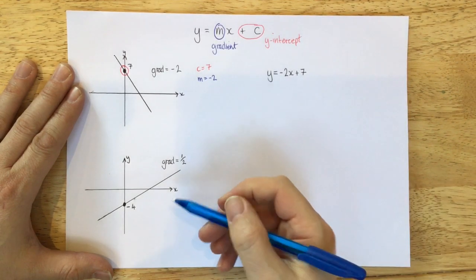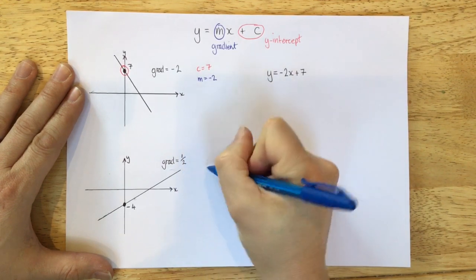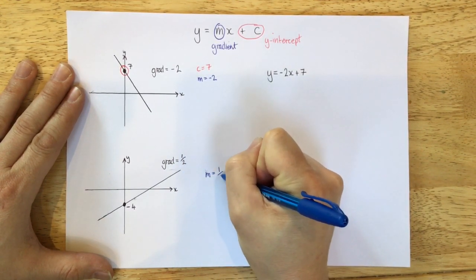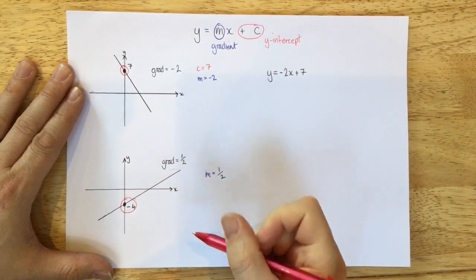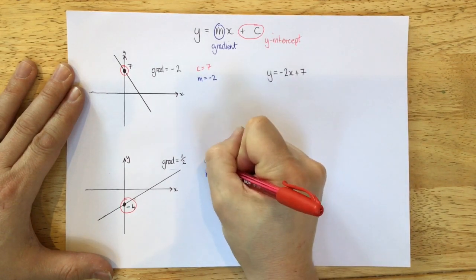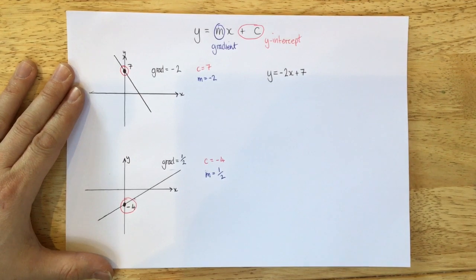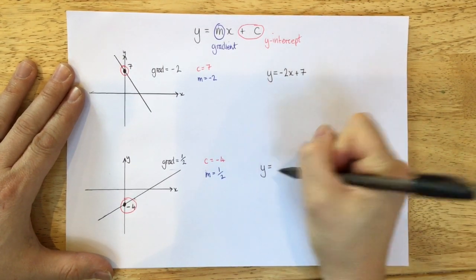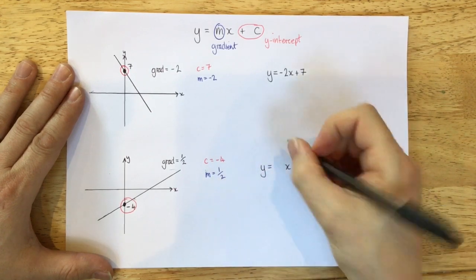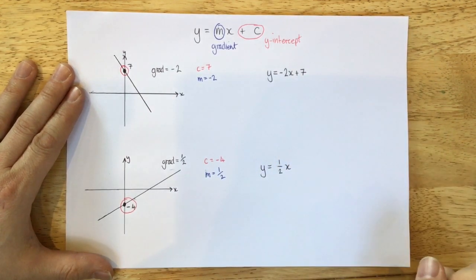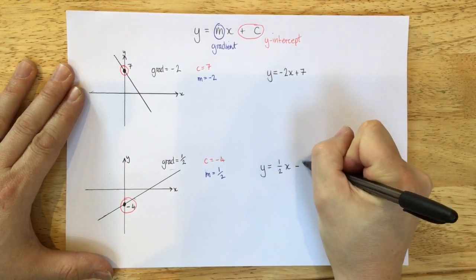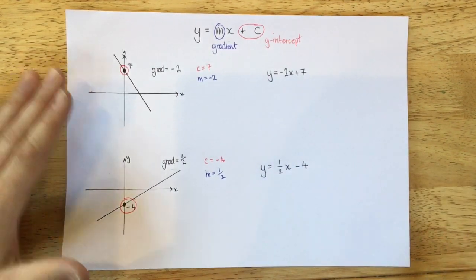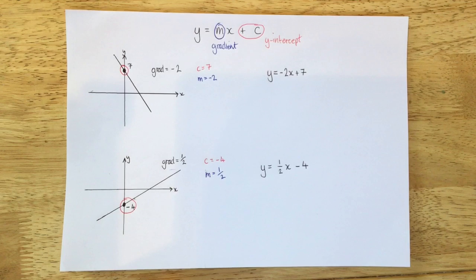Same sort of thing down below here. Notice this time we're told that the gradient is a half, so I know that m, the gradient, is a half. And you can see from the graph here that it crosses the y-axis at minus 4. So in this case, c is negative 4. And again, let's put that into the equation, y equals mx plus c. Well, m is a half, so instead of mx, we have a half x. And instead of plus c, we have plus minus 4. And a plus and a minus together just stays minus 4. And so we've got the equations of those two lines just from knowing the gradient and where it crosses the y-axis.